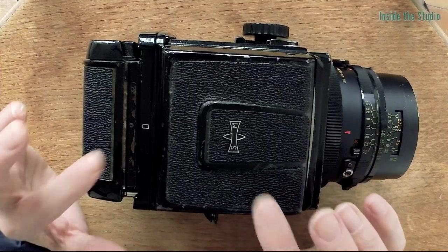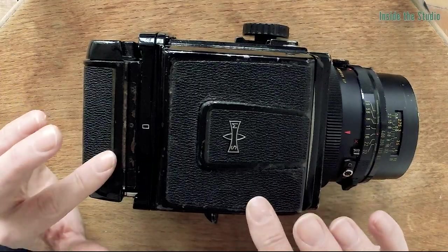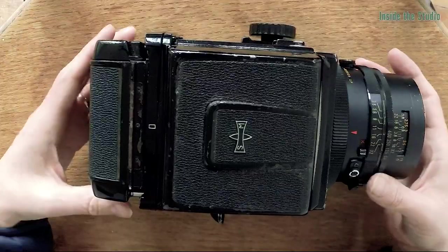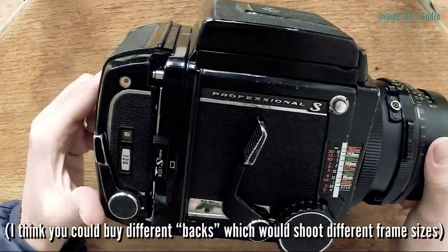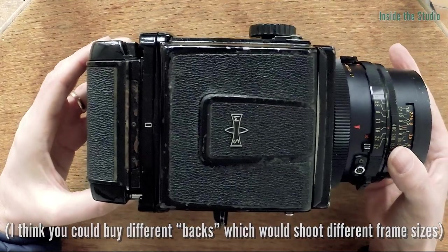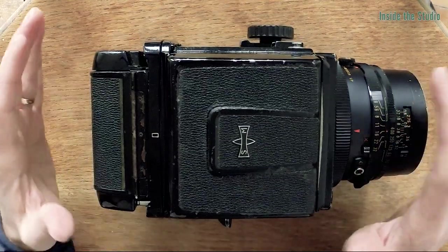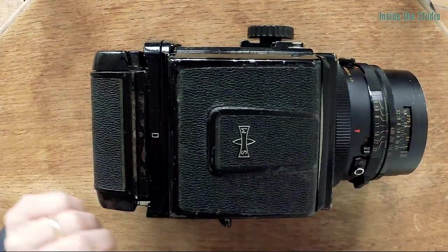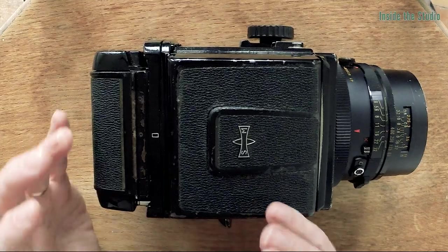Medium format cameras shoot on 120mm roll film. There are different kinds of cameras that use that film. The Hasselblad, which is the famous medium format camera which has square frames, shoots 6x6. This shoots 6x7. So you actually get fewer shots to the roll of film because it's using more film per shot, but you are using the same film.